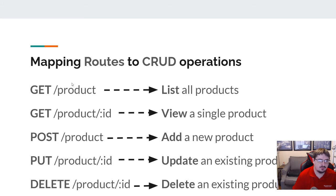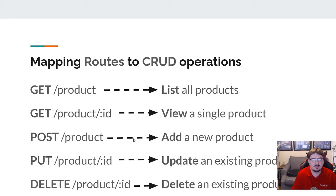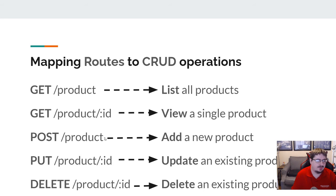That's reading the data — both of those are operations to read. The next thing is to be able to add products. So the route here is POST /product. If I POST to product, then I'm adding a new product. The ID would be auto-increment, so you wouldn't need to put that on. We don't put an ID in the path here because we don't know the ID yet.